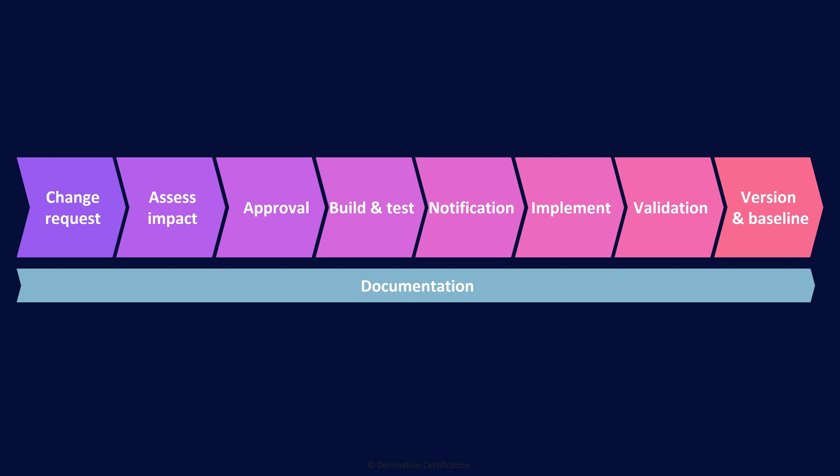If it's a major change costing millions, you probably need approval from a whole bunch of senior stakeholders. Conversely, if it's a super minor change, auto-approval might be totally sufficient. Once a change is approved, you do an appropriate amount of building and testing, notify the right people at different steps throughout the process, implement the change, do validation testing after the change is made, and update things like DRP or BCP plans or configuration baselines. Good documentation is required through every step of the change management process.